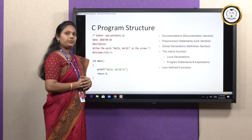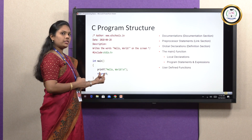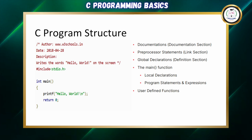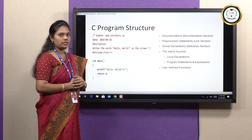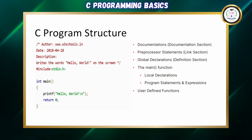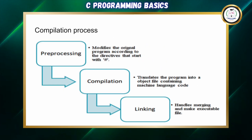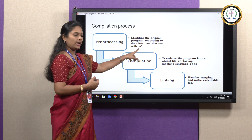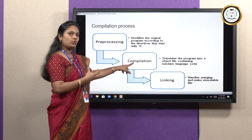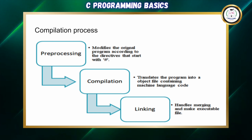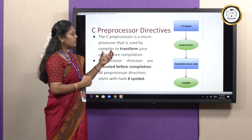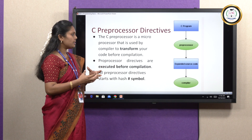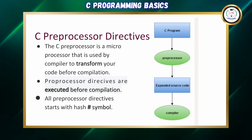Each statement in C is terminated by a semicolon. The printf function is used to print output on the screen — whatever is enclosed within double quotes is printed as-is. So 'Hello World!' will be printed, but '
' will not be printed as text. The compilation process involves three steps: preprocessing — executing preprocessor directives that begin with '#'; compilation — translating correct source code into machine language; and linking — merging and making an executable file.